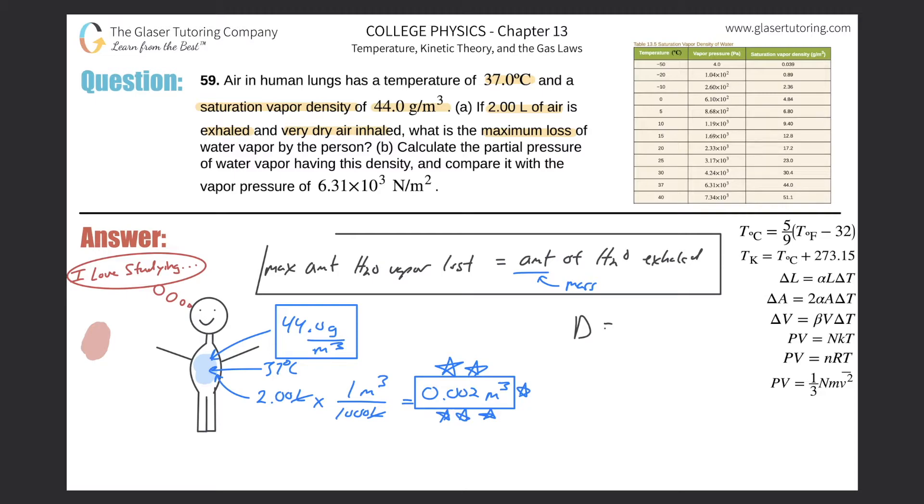If we know that density equals mass per volume, and I solve this for mass, meaning mass equals density multiplied by volume, that's how I'm going to find the mass. We take the density here, the maximum saturation density of 44.0, multiply it by the volume that was exhaled.